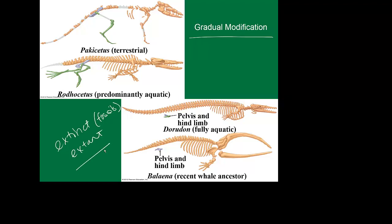We can compare present-day species that we know what they look like — we know their structures — and we can compare them to organisms that are now extinct. We'll look at fossil records and so on.